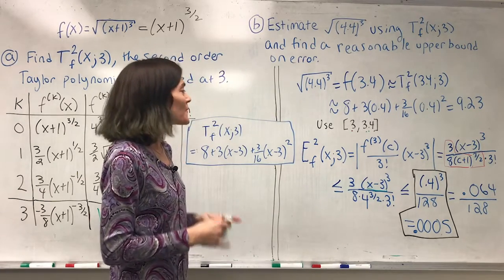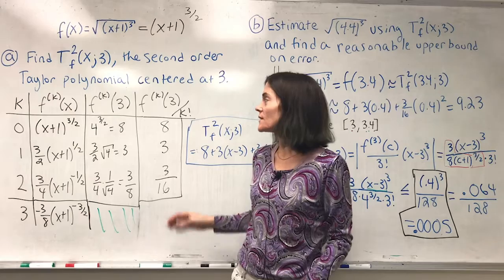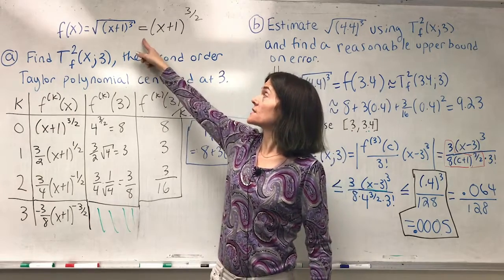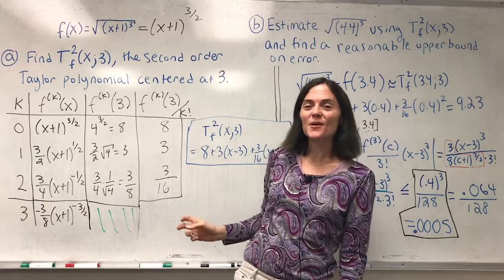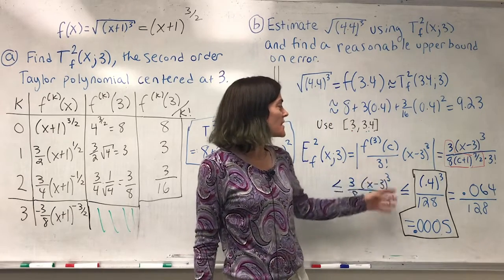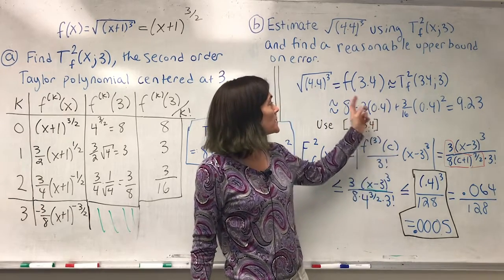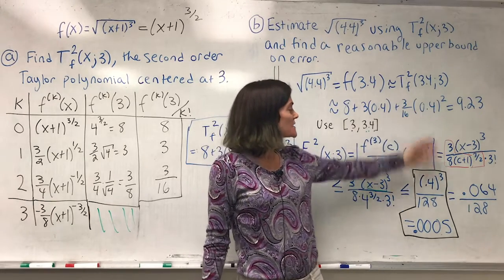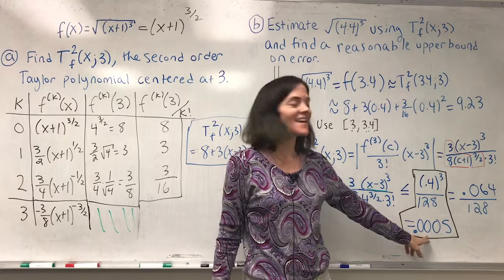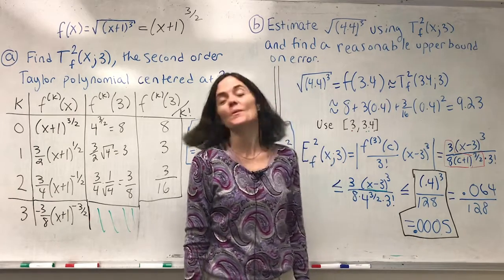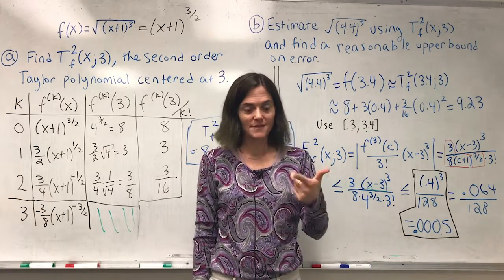Maybe what I will do at the end of this video, I will include a graph of this function together with this second order Taylor polynomial and show the difference between the actual function and this value. And we will see, hopefully, that the error is less than 0.0005.